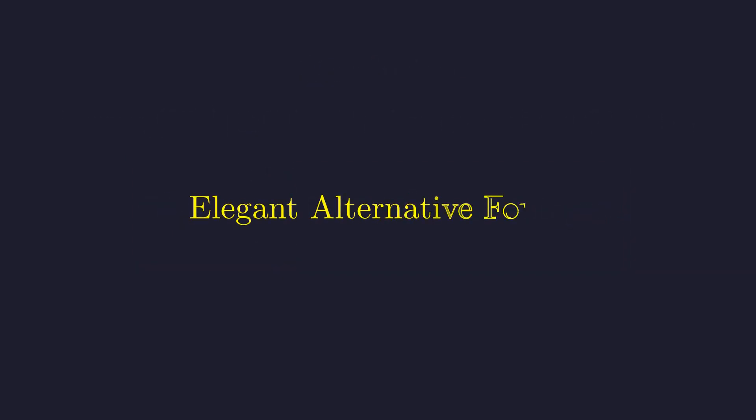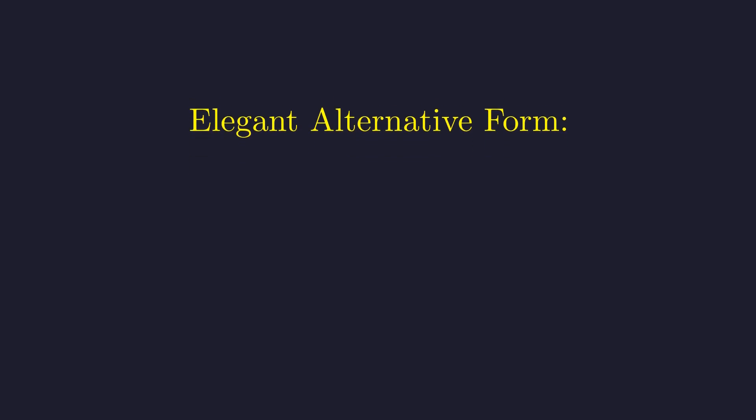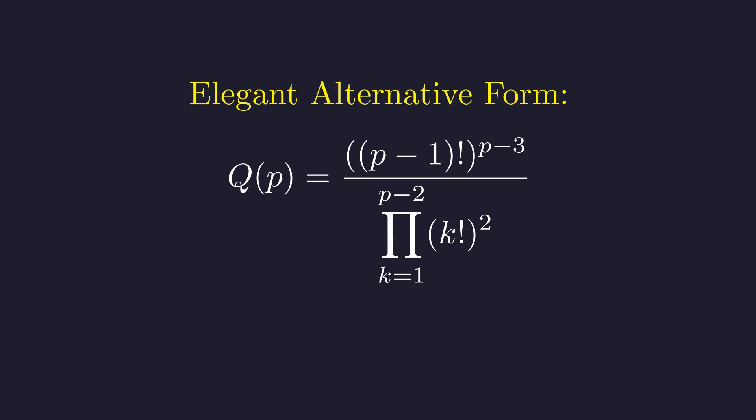But wait, there's more! Our journey through valuations has uncovered something beautiful: hidden within our proof is an elegant alternative way to write Q(p). This factorial representation falls out naturally from our valuation work. Now the integrality of Q(p) becomes a statement about divisibility of factorials—that this product of squared factorials in the denominator actually divides the power of (p minus 1) factorial in the numerator.